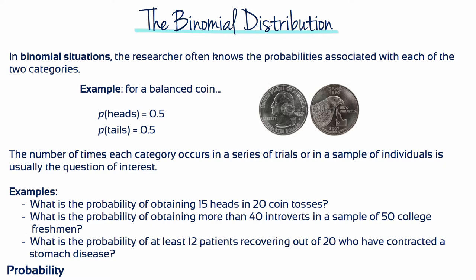In binomial situations, the researcher often knows the probabilities associated with each of the two categories. For example, with a balanced coin, the probability of getting heads is 0.5 and the probability of getting tails is also 0.5. The number of times each category occurs in a series of trials or in a sample of individuals is usually the question of interest. For example, what's the probability of obtaining 15 heads in 20 coin tosses, or more than 40 introverts in a sample of 50 college freshmen, or at least 12 patients recovering out of 20 who have contracted a stomach disease?